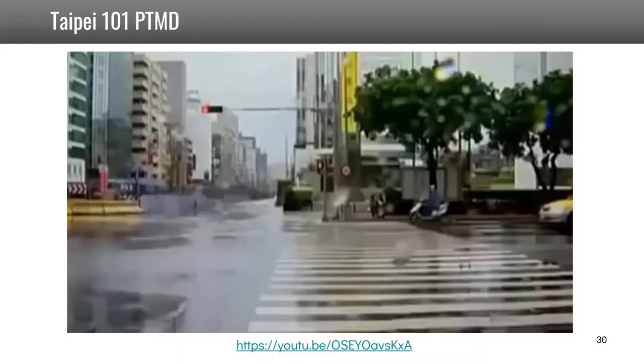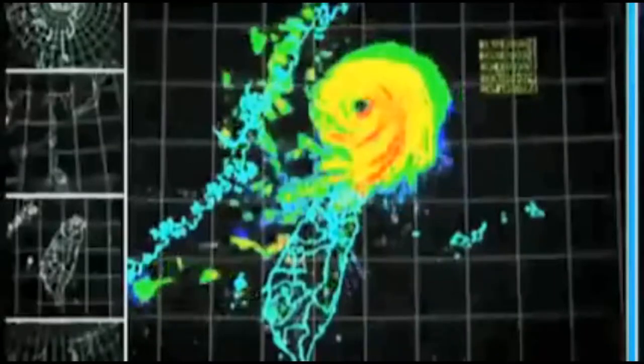Let's now see how Taipei 101 actually behaved under a typhoon. On the 3rd of October 2005, Typhoon Longwang blasted hurricane-force winds across Taiwan and presented the damper system with its first serious test. This film shows the ball in action as the 110 kilometer an hour winds blow that day.